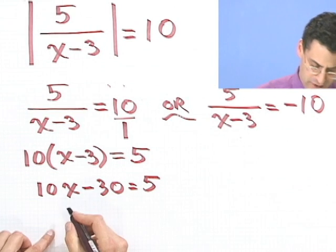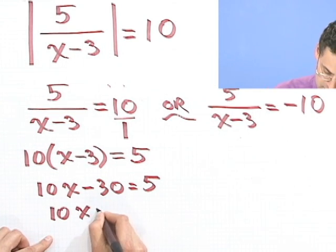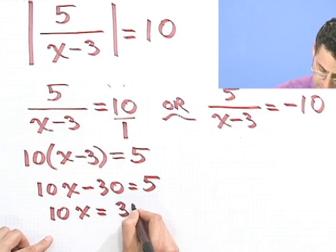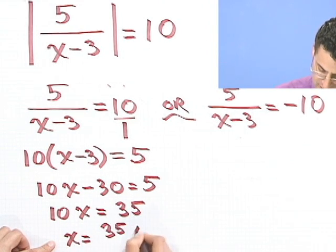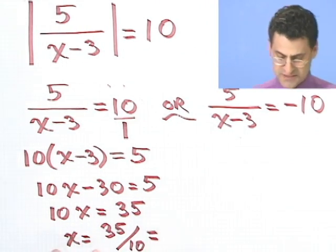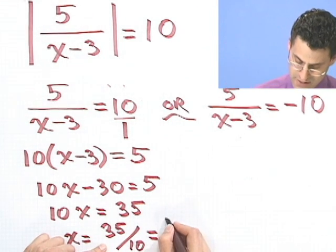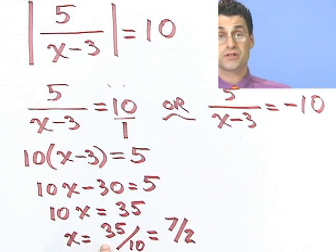And then how would I solve this? I'd bring the 30 over and I'd see 10x equals 35. And so I'd see that x equals 35 over 10. And I can reduce that a little bit by dividing top and bottom by 5 and see 7 over 2. So there's one solution.